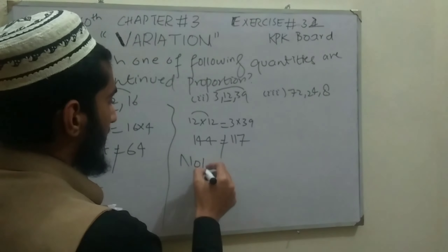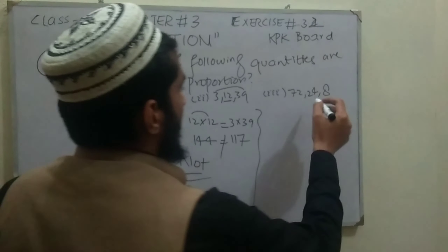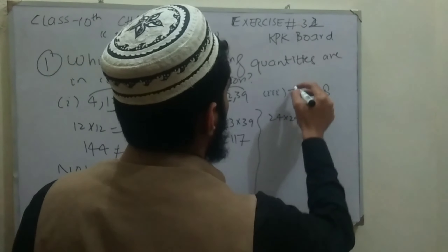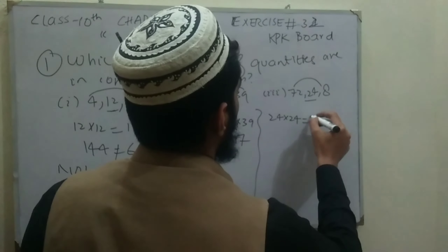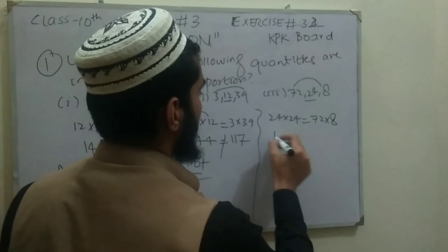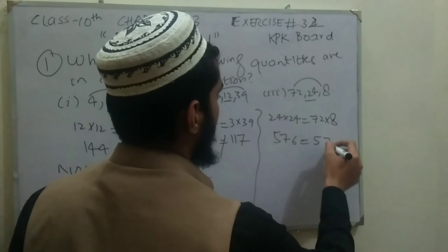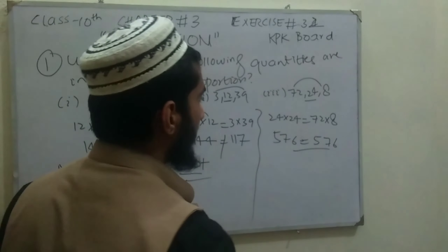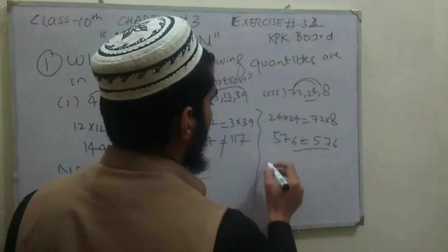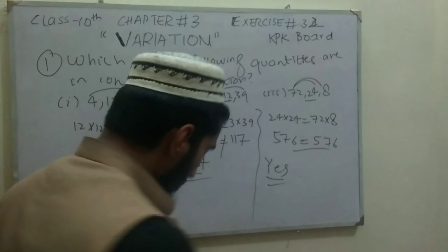Checking Part 3: 24 × 24 should equal 72 × 8. We get 24 × 24 = 576 and 72 × 8 = 576. Since the two sides are equal, 72, 24, and 8 are in continued proportion.